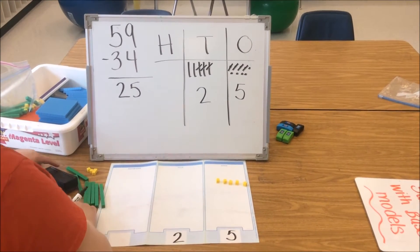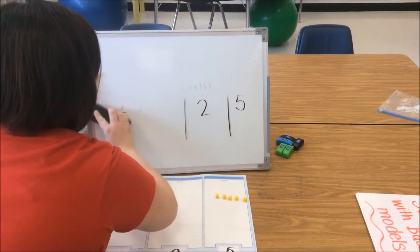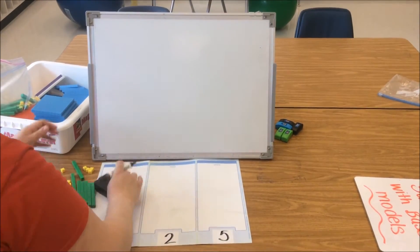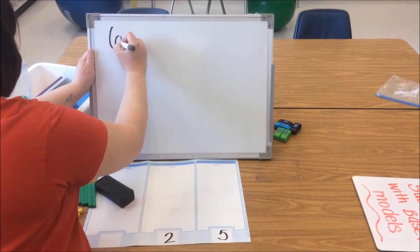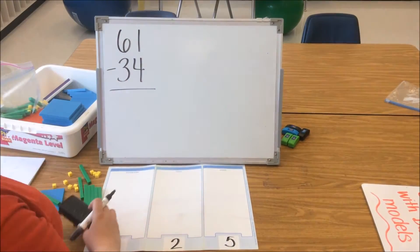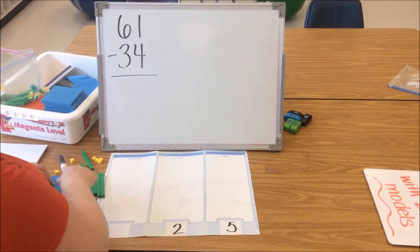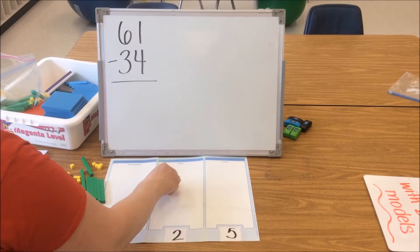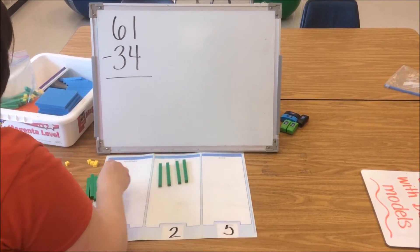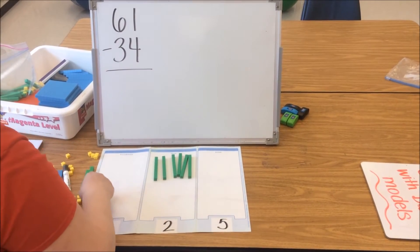Next we're going to model subtracting using the decomposing strategy. This problem is 61 minus 34. Again, you're going to have your student or your child model our first number 61 using the base 10: 10, 20, 30, 40, 50, 60, 61.